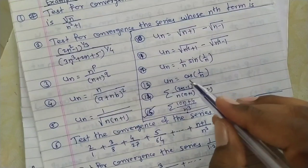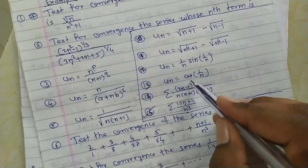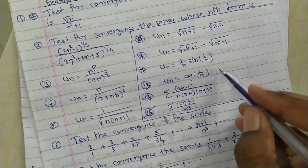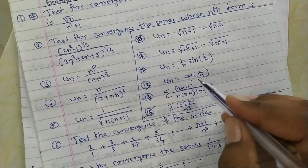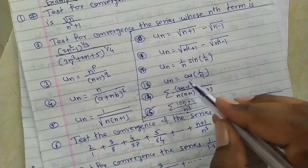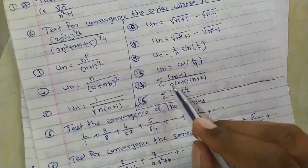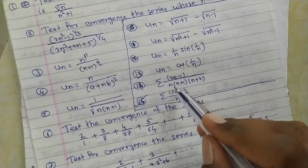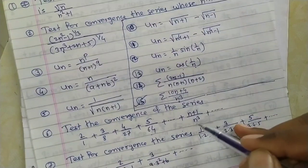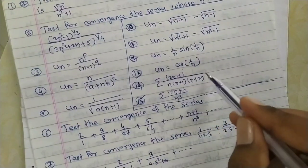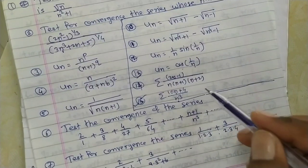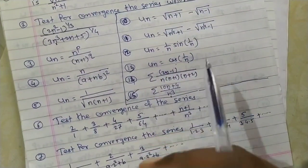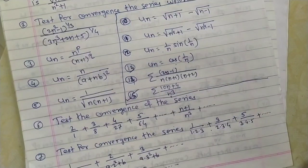The next problem involves cos(1/n). Using the divergence test: as n→∞, 1/n→0, and cos(0) = 1, so limit of un = 1 ≠ 0. Therefore by the divergence test, that series is divergent. A similar approach applies to the next problem as well. In the next video, we will start the ratio test.